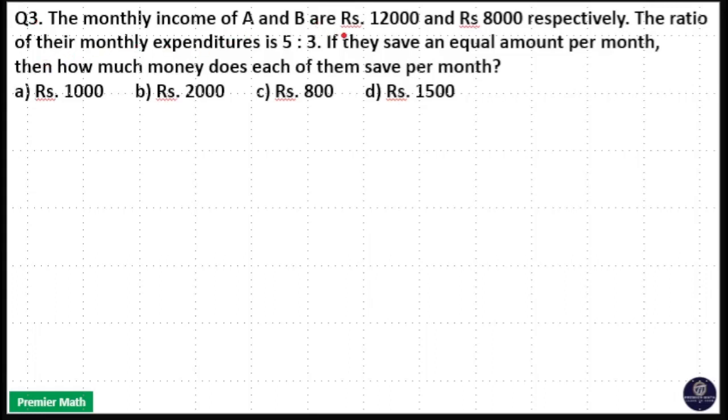The monthly income of A and B are 12,000 rupees and 8,000 rupees respectively. The ratio of their monthly expenditure is 5 to 3. If they save an equal amount per month, how much money does each of them save per month?